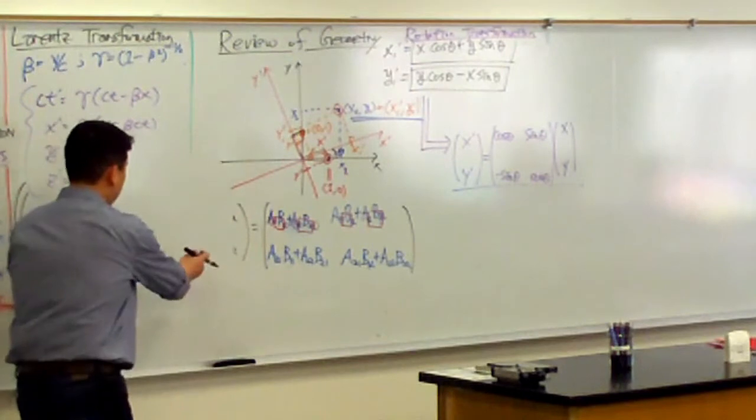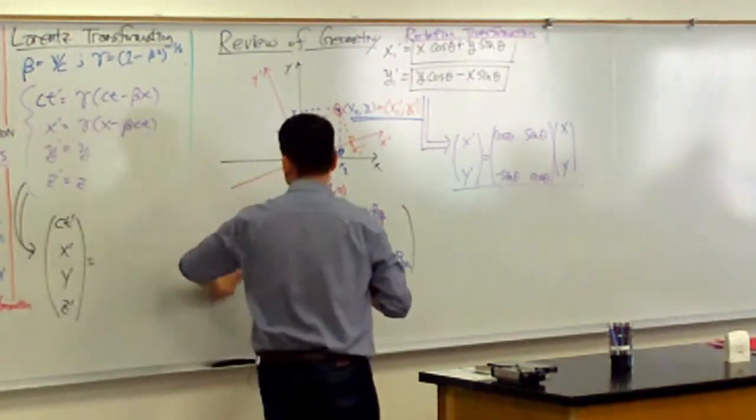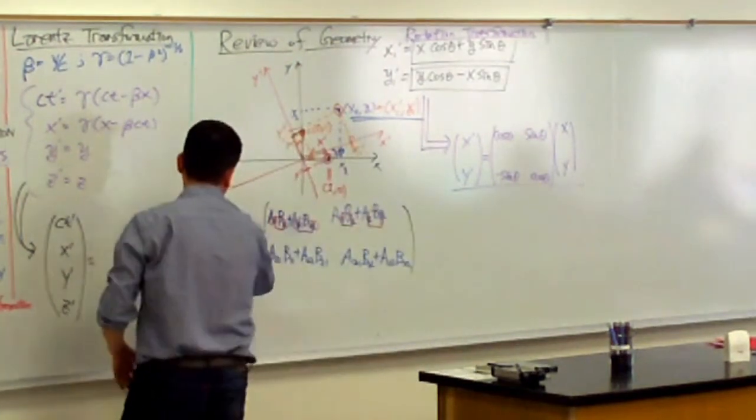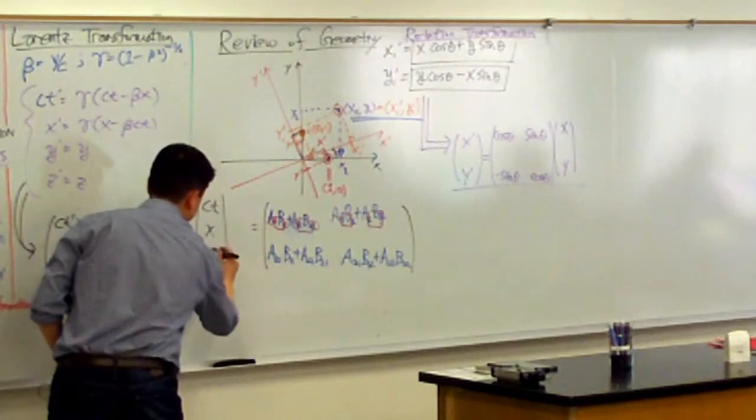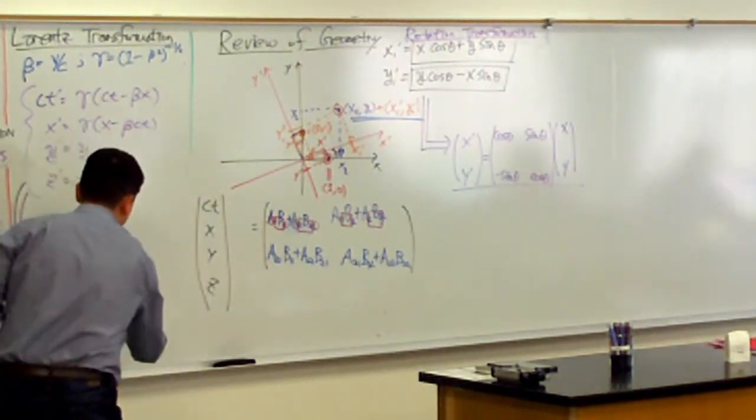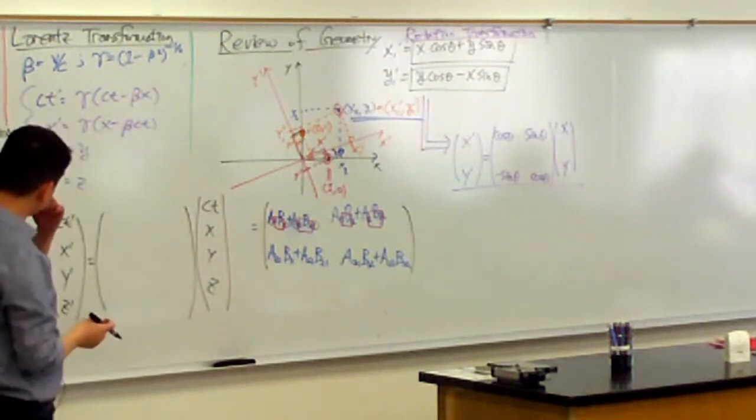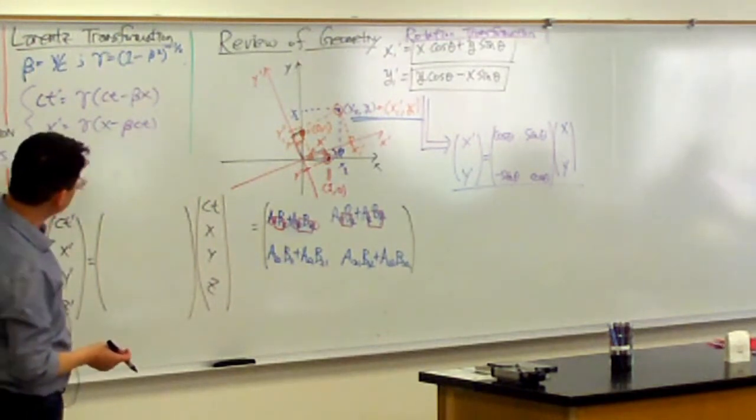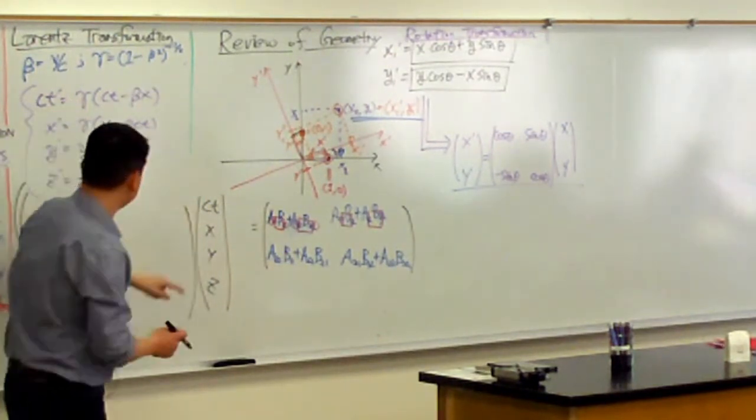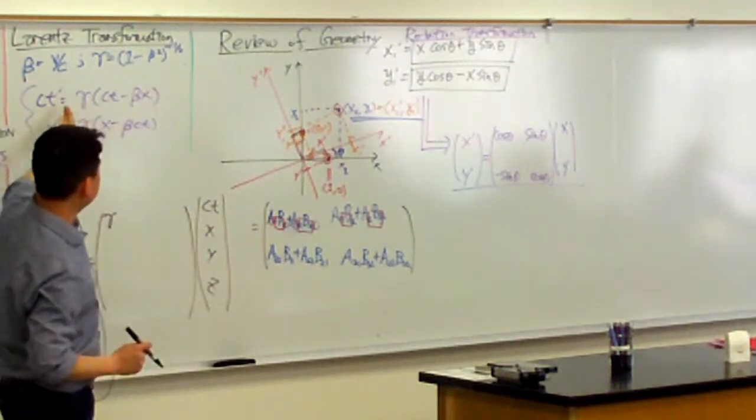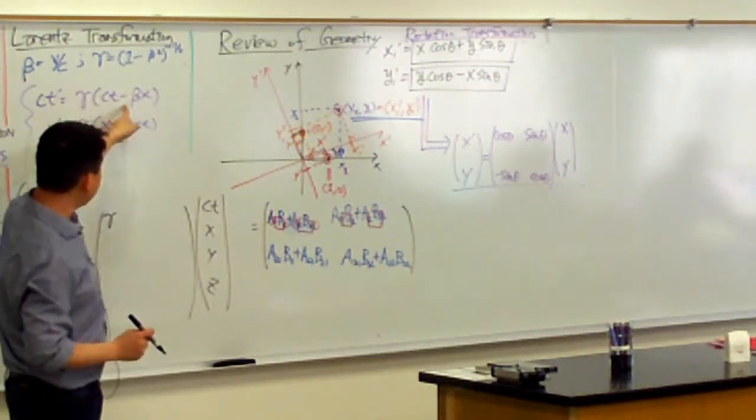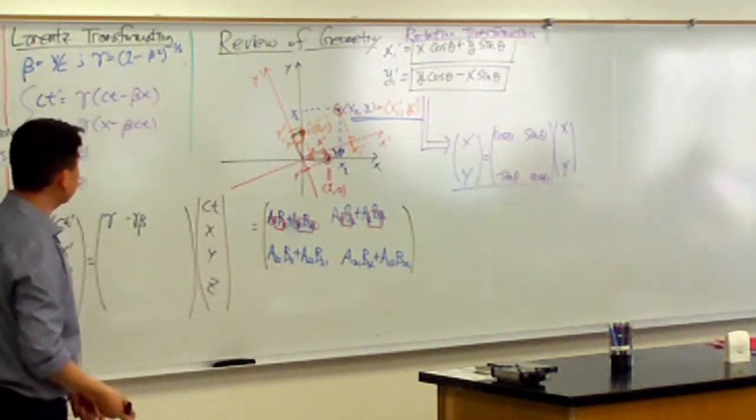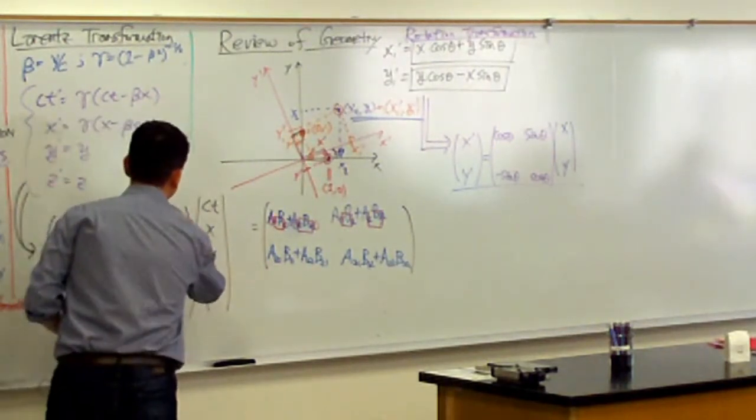And that's a result of multiplying a four by four square matrix with another column matrix, which represent the coordinates in the unprimed coordinate system. And now what goes in here is, well, let me try to write it down correctly. So, for Ct prime, I want it to be gamma times Ct, so gamma here. And if I expand this out, it's about minus gamma beta times x. So, minus gamma beta. And then I don't want any y's or z's, so it'll be 0, 0.